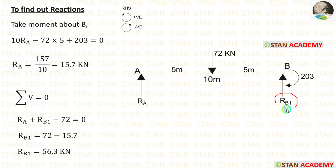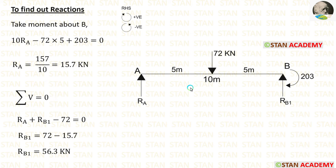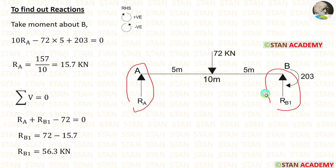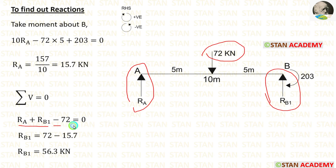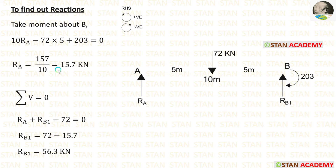To find RB1, let us apply the rule: summation of vertical forces equals 0. We are having three vertical forces. RA and RB1 are acting upwards, so they are positive. The point load of 72 kN is acting downwards, so it is negative. RA we have already calculated. After calculation, we are getting RB1 equal to 56.3 kN.